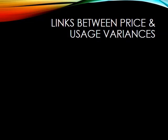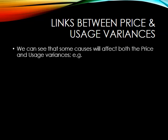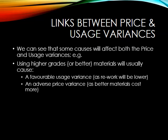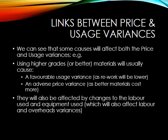From our previous two slides I think you should be able to recognise that there are links between price and usage variances. So for example if we are using higher grades of materials, that will normally cause a favourable usage variance but it will also cause an adverse price variance. So if we are going to change the grade of material that we are going to use we have got to trade one off against the other. Similarly they are going to be affected by changes to labour used and equipment used, which is going to affect labour and overhead variances.